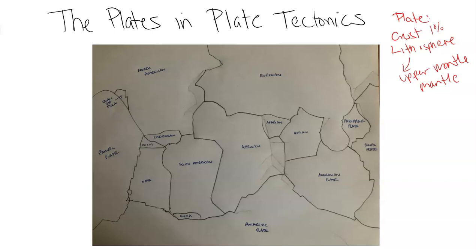The plates are constantly being pushed and pulled around by convection currents in the asthenosphere working underneath the lithosphere. This started with Wegener's theory of continental drift and has now developed into this very comprehensive plate tectonic theory, which is the best one we have to explain all the different processes and things that happen on the Earth.